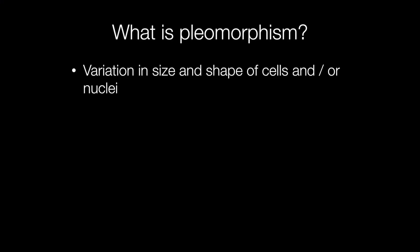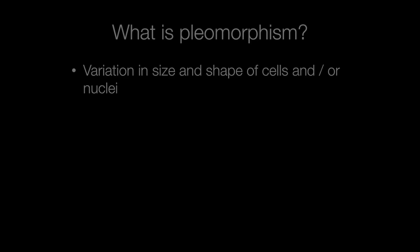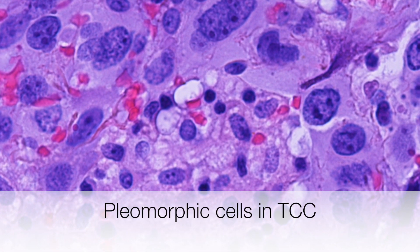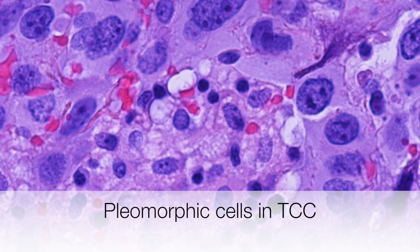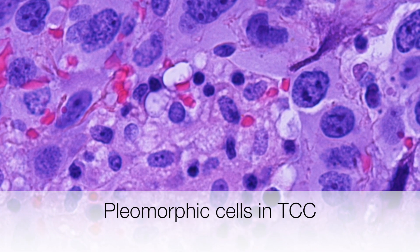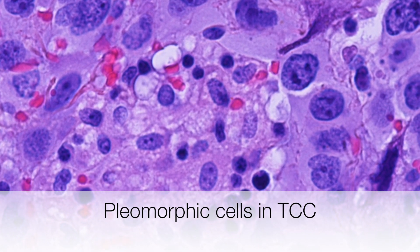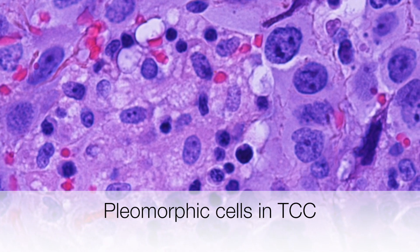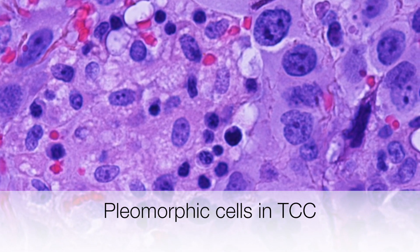In pathology, however, the most frequent use of the term pleomorphism is where there is variation in size and shape of cells and/or nuclei. This is a good example of pleomorphism in a tumour where there is marked variation in size and shape of cells and nuclei.